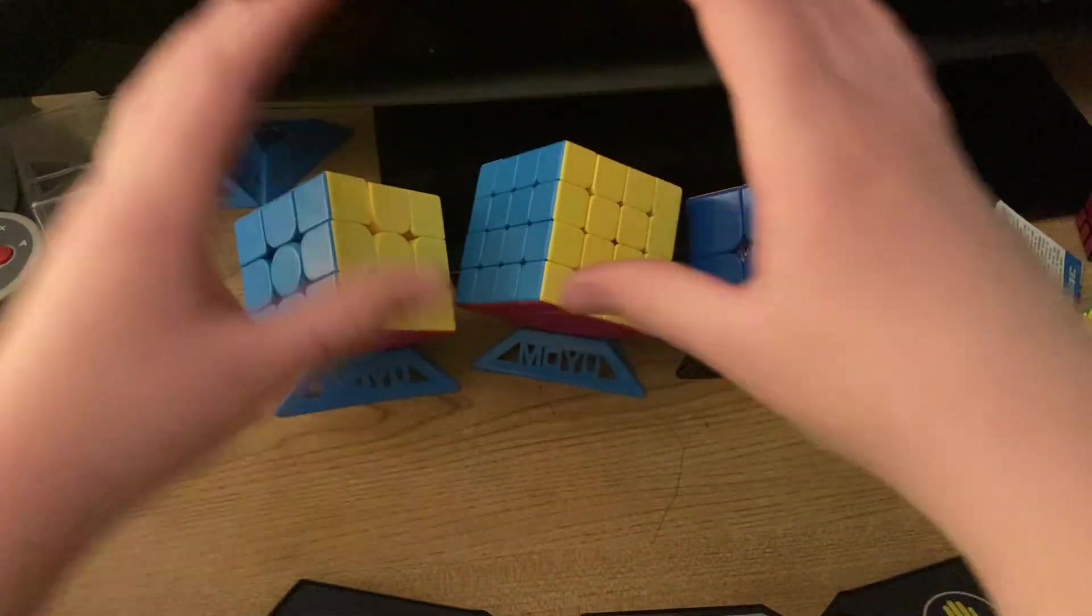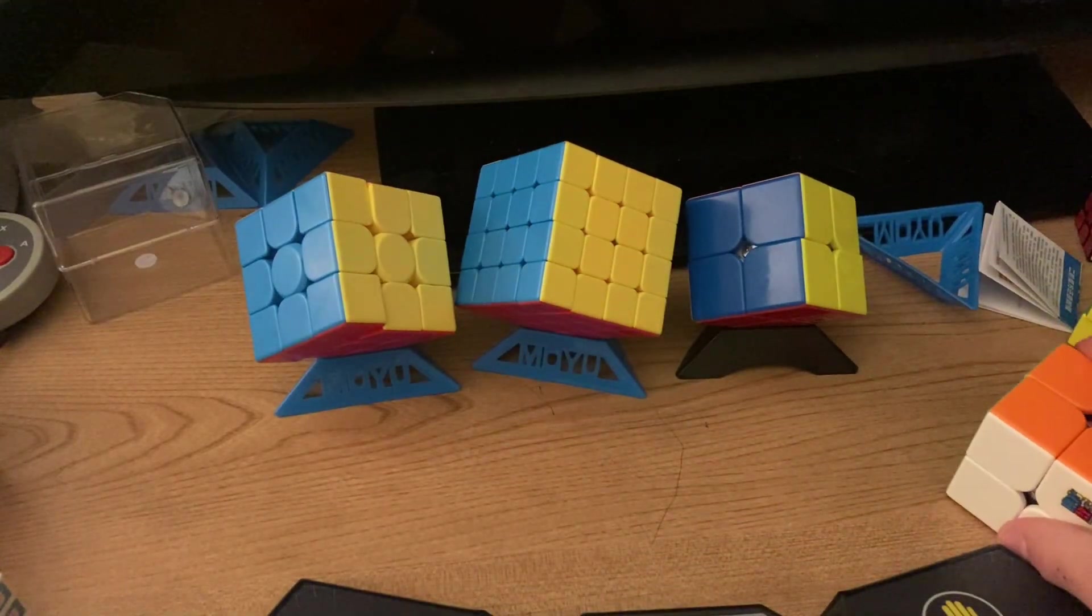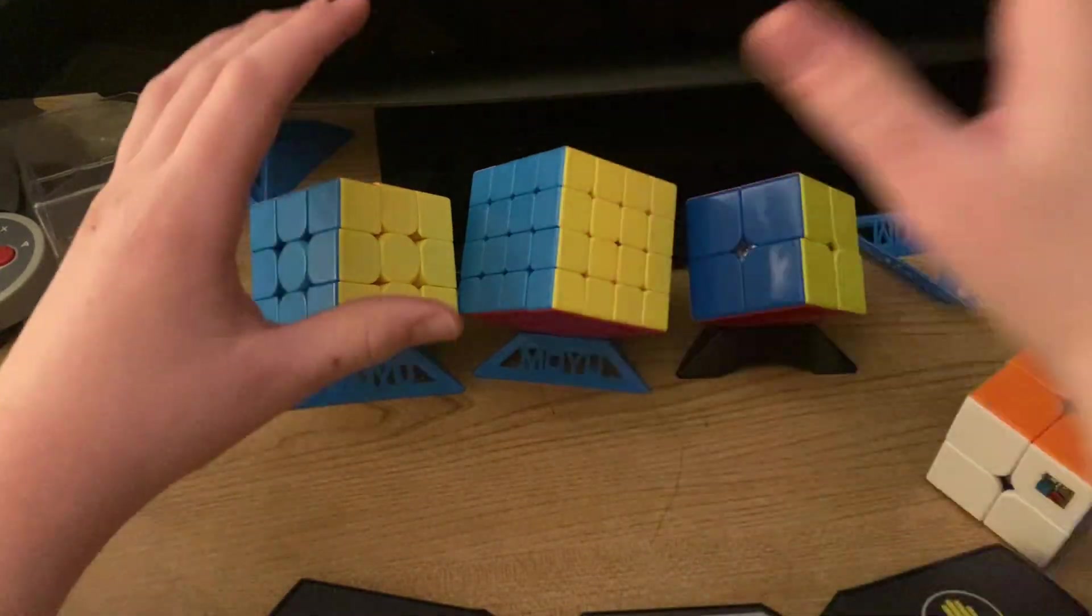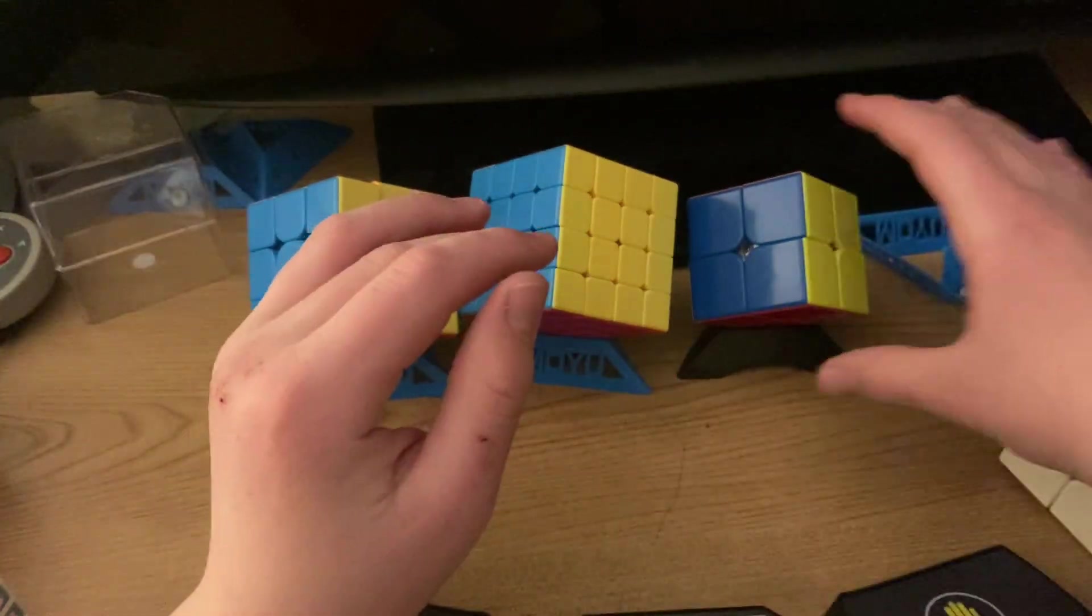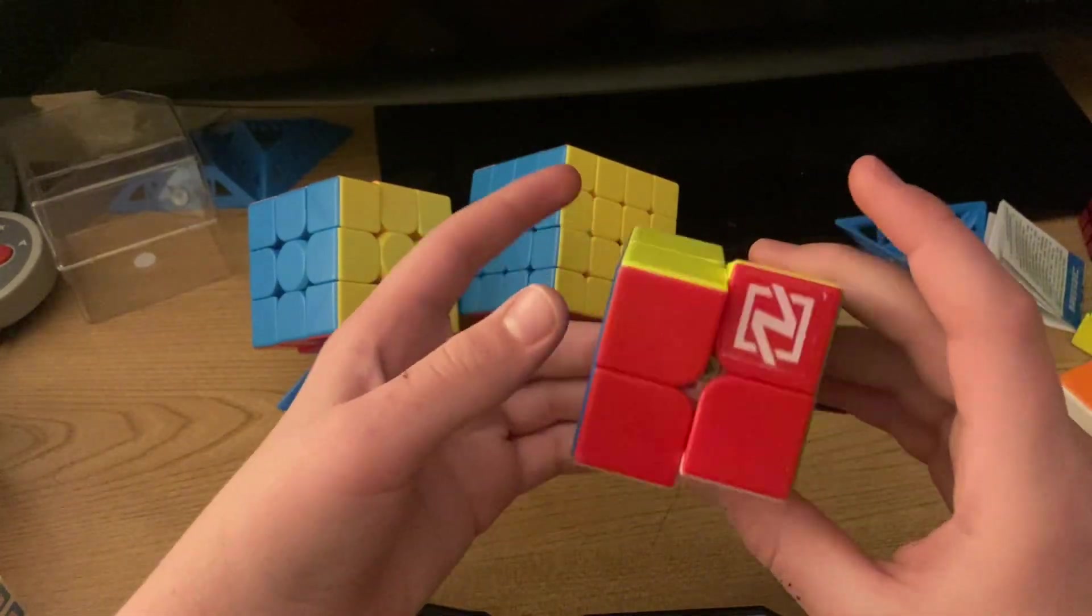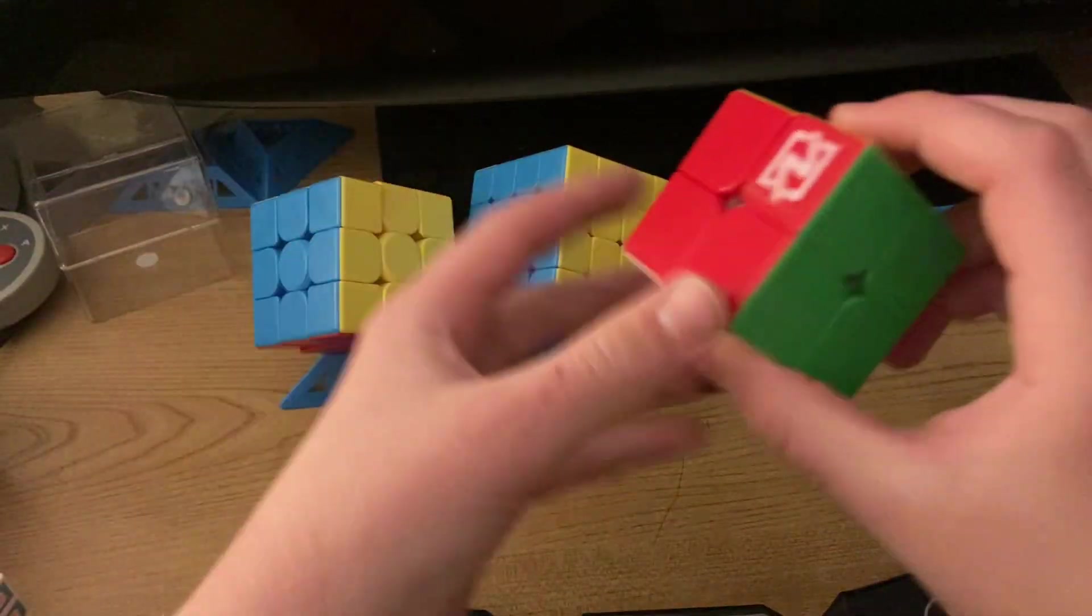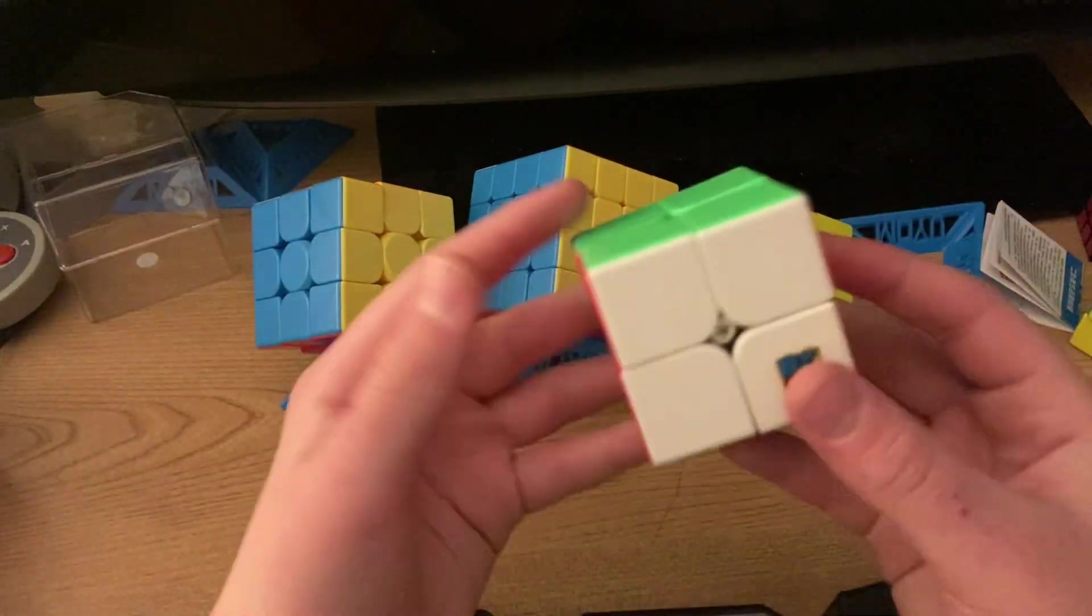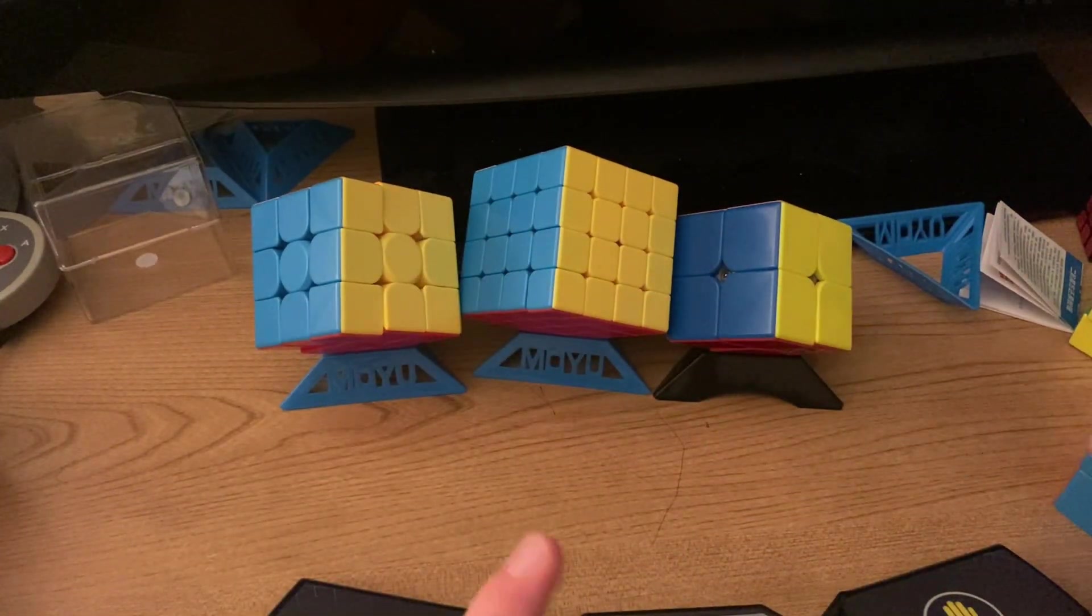And then I do have a Moyu Meilong 2x2. It's not Moyu Meilong. What is wrong with me? It's Mofang Jiaoshi. Mofang Jiaoshi 3x3. Mofang Jiaoshi 4x4. I do have a Mofang Jiaoshi 2x2, but that's not the cube I use. This is my main 2x2. It has really smooth, nice, stable turning. And this is the next cube 2x2. I've got this from Walmart for like $4. And it's my main.